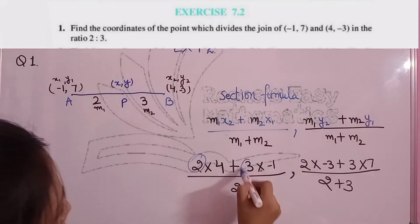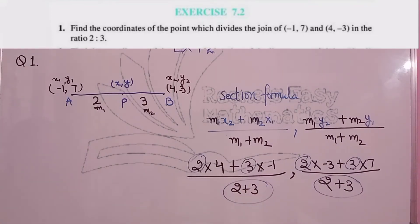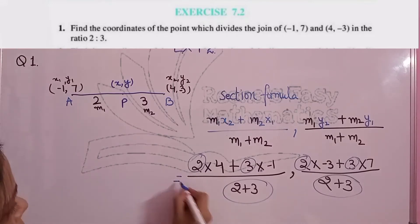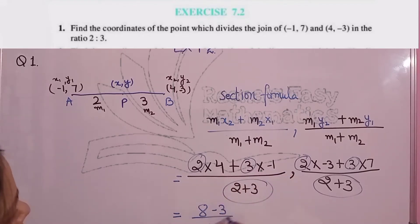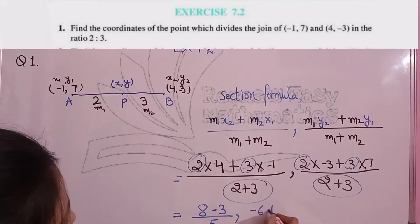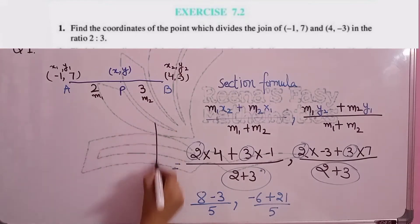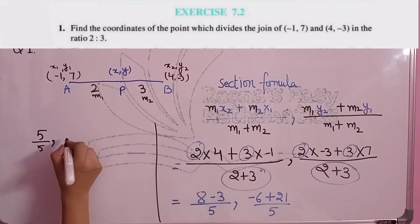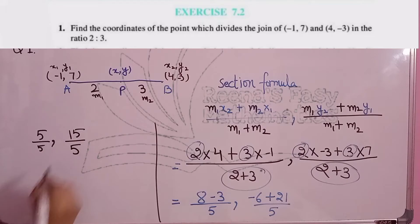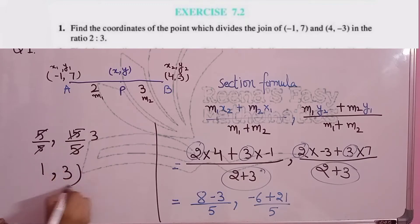Everything here is coming out the same. Once you write it correctly the first time, all subsequent writing will also be correct. Still, do cross-check after writing the question. Using the BODMAS formula: 4 into 2 is 8, 3 into -1 is -3 upon 5, and here it is -6 plus 21 upon 5. 8 minus 3 gives 5 upon 5, and -6 plus 21 gives 15, so 15/5 = 3. The coordinates of point P are (1, 3).